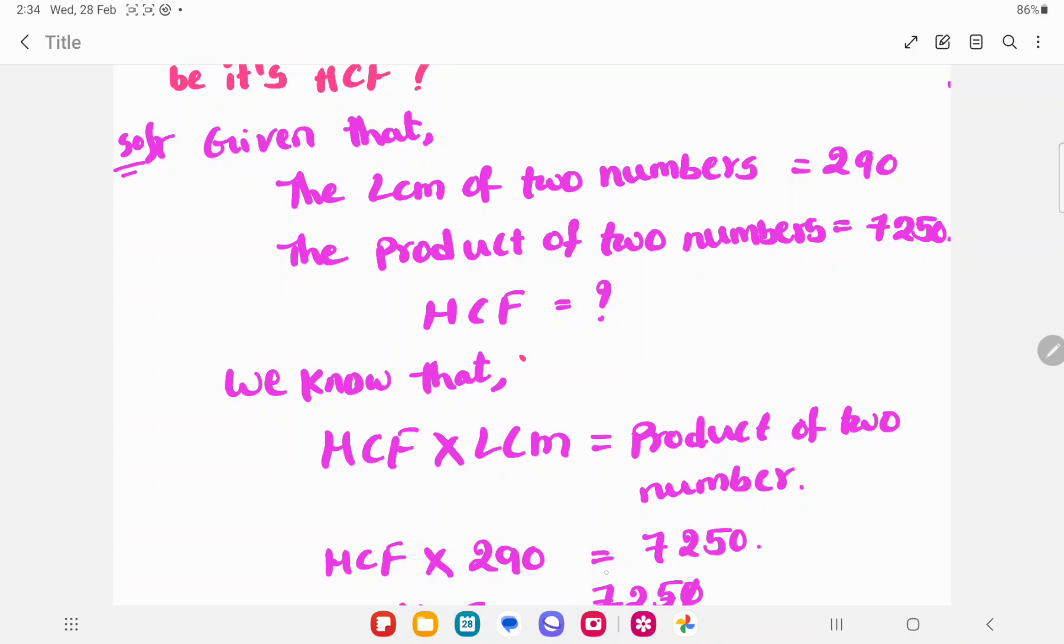So, 290 is equal to the product of two numbers. They also given how much? 7250.